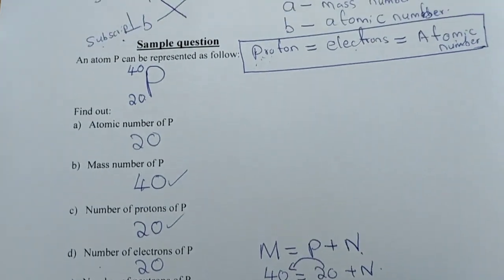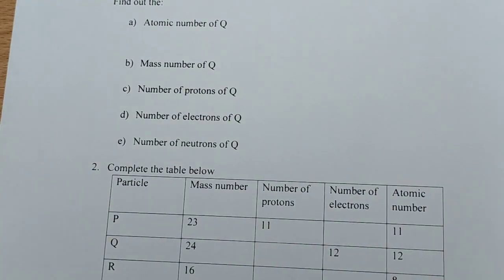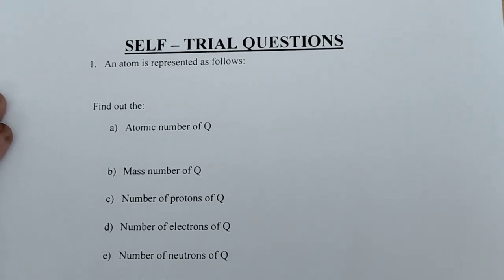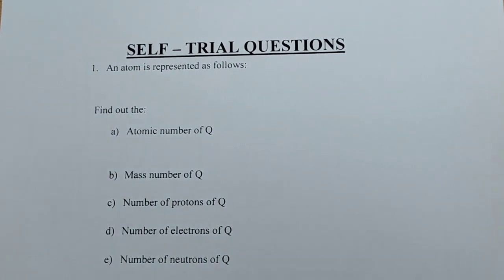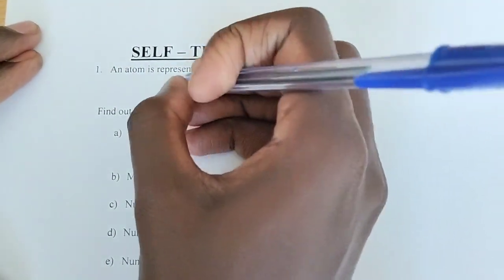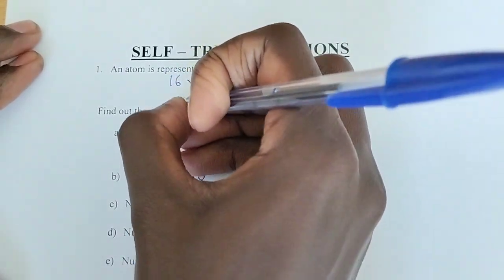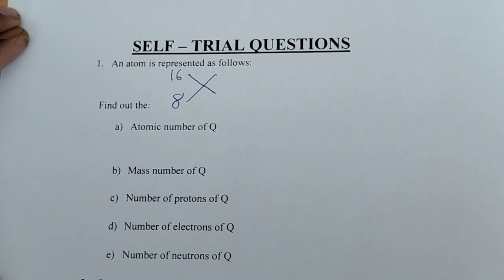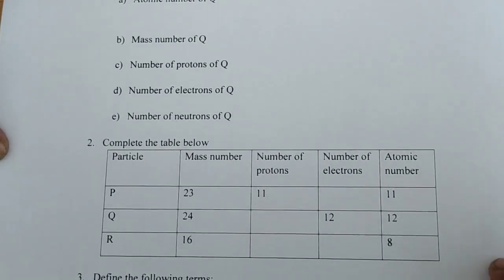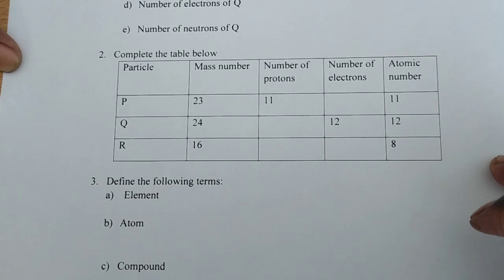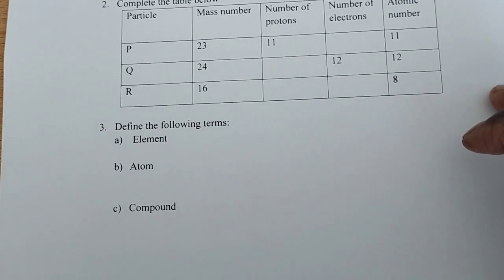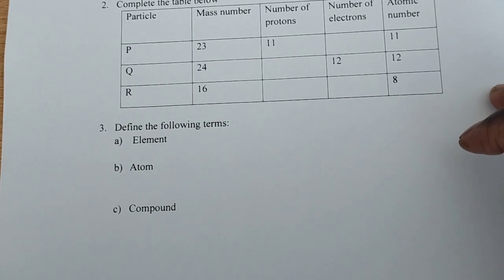Now we have self-trial questions. Question one: element X has 16 in the superscript and 8 in the subscript — find the required values. There is also question two and question three. Try these questions and share your answers in the comment section. Welcome.